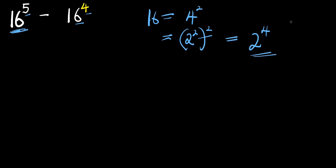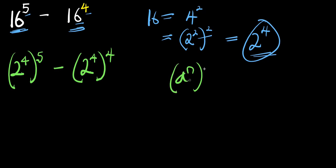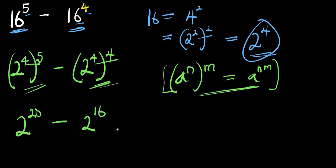So we replace this 16 with 2 to the power of 4, and the same thing here. So we have 2 to the power of 4, raised to the power of 5, minus 2 to the power of 4, raised to the power of 4. Applying the rule (aⁿ)ᵐ = aⁿˣᵐ, we have 2 to the power of 4×5, that is 20, minus 2 to the power of 4×4, that is 16.